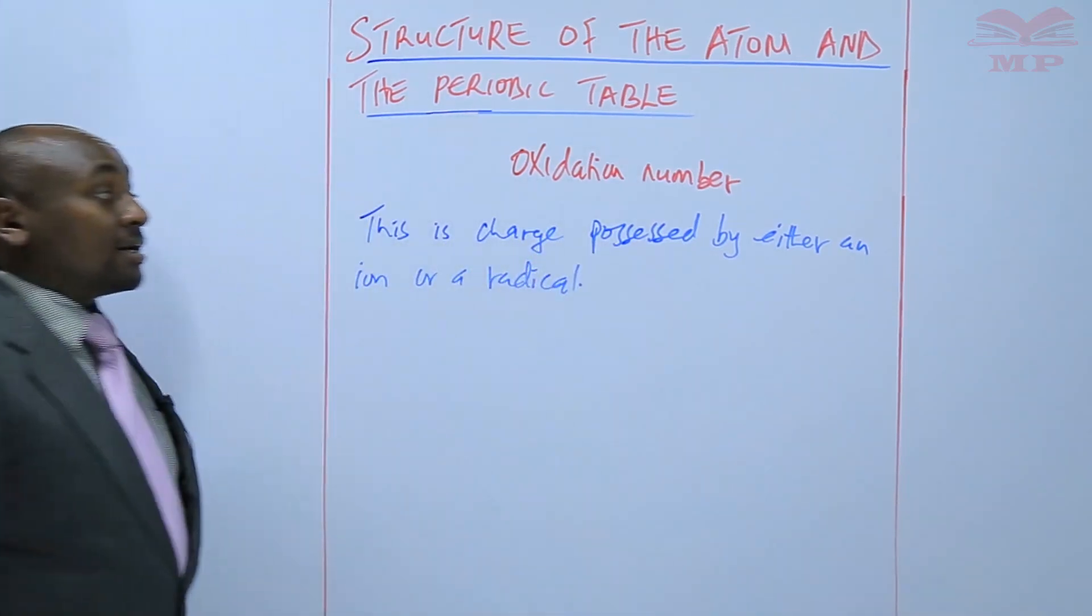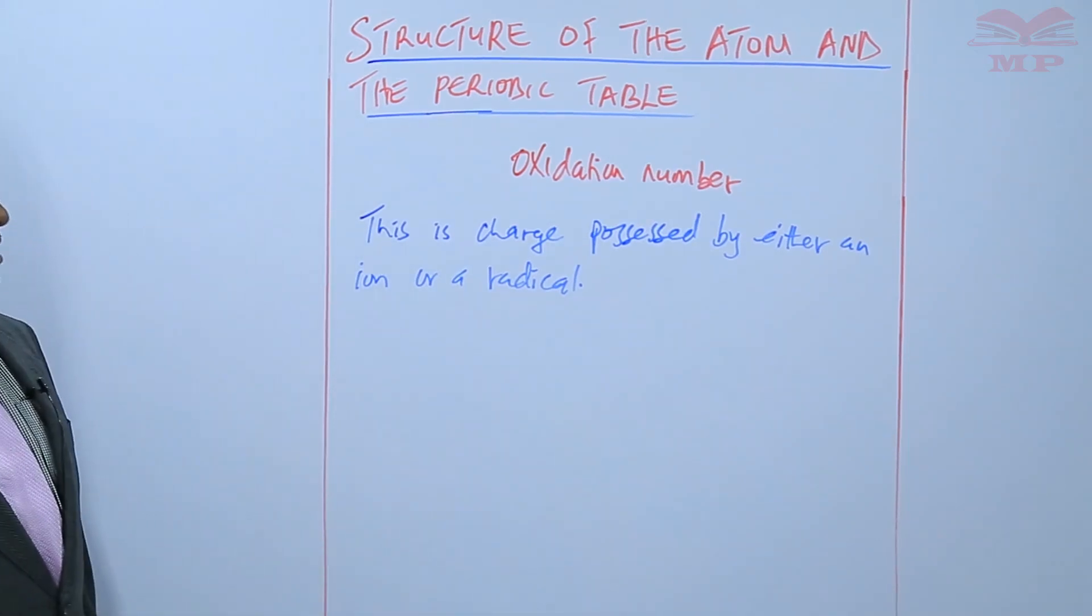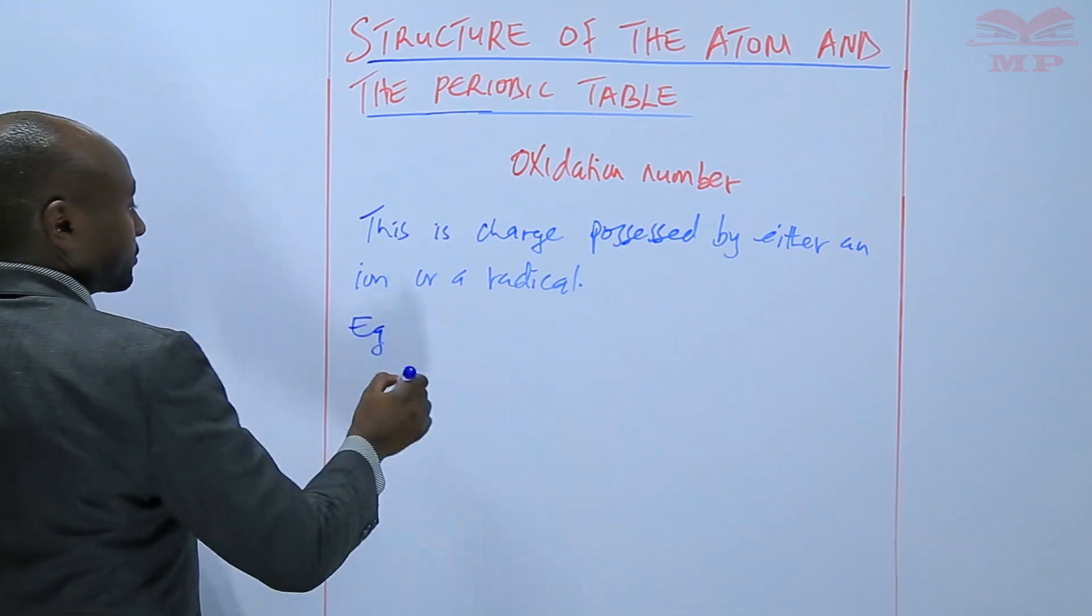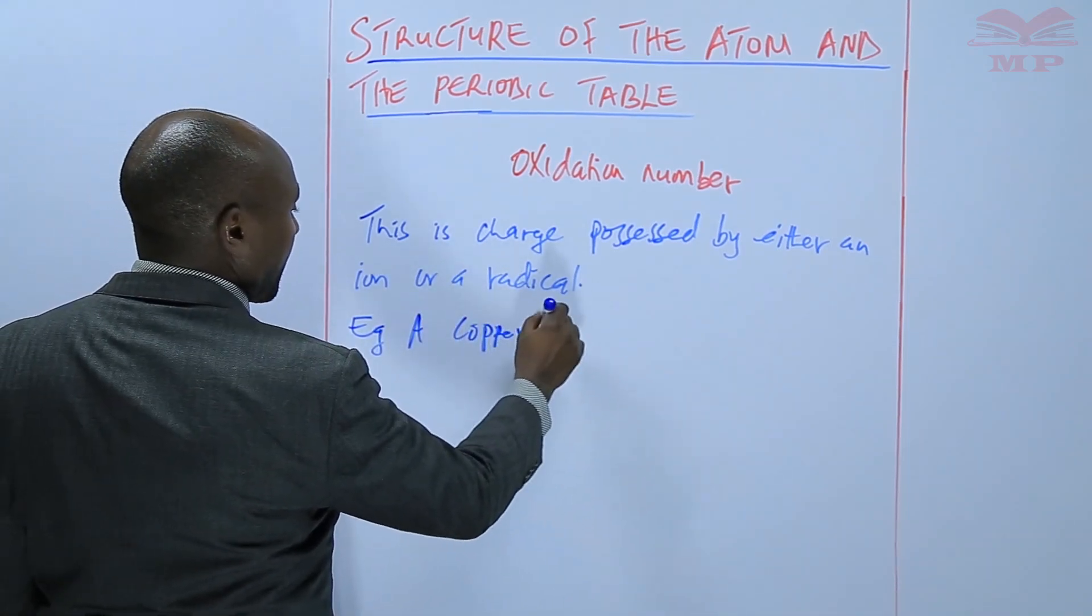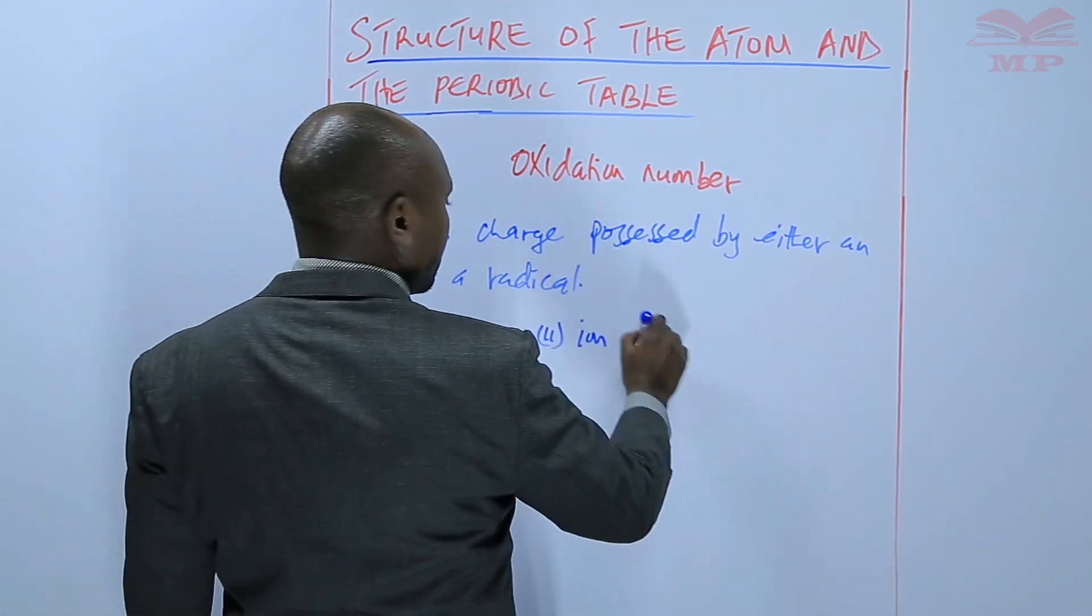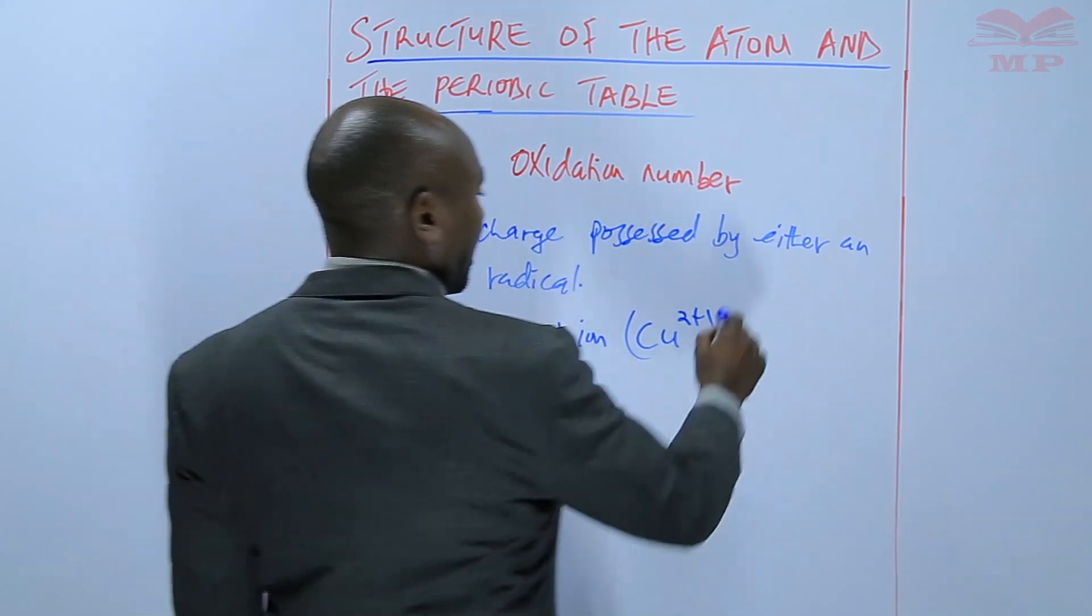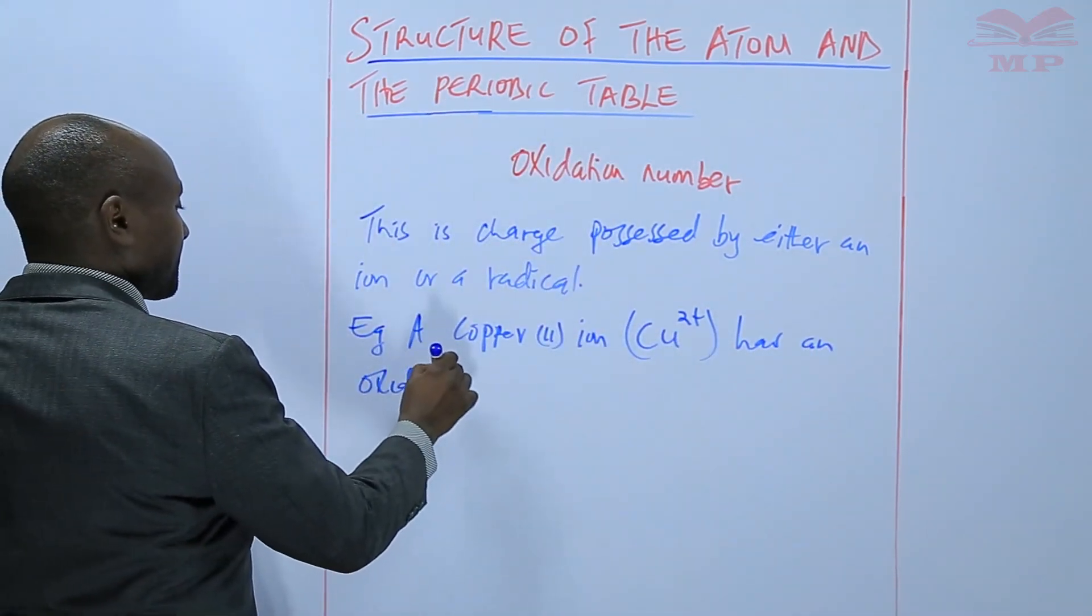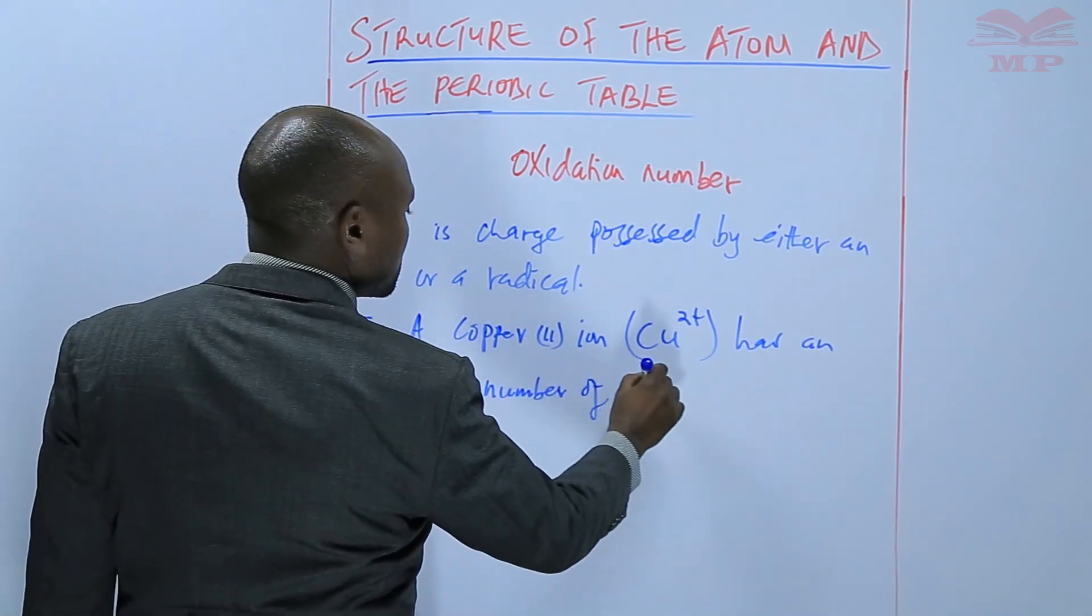Ions and radicals are charged particles. So the charge that they possess is referred to as the oxidation number. So for example, a copper 2 ion written as Cu2+ has an oxidation number of positive 2.